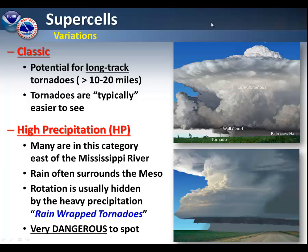Classic supercells are the ones that have potential for long-track tornadoes, 10 to 20 miles in length. Typically, these are easier to see. These are the ones that most frequently we'll see pictures from out on the plains, where you can see the tornado from 20 to 30 miles away.